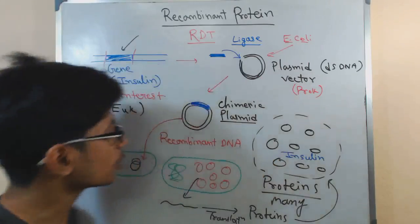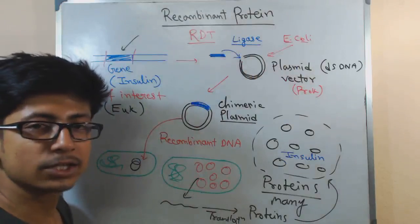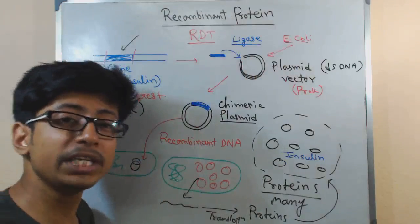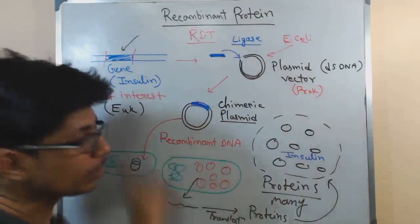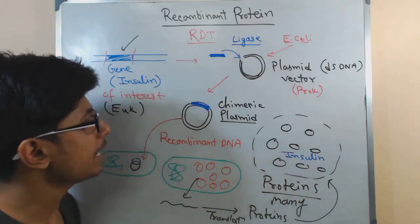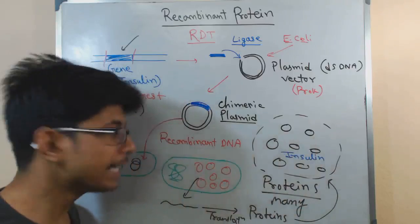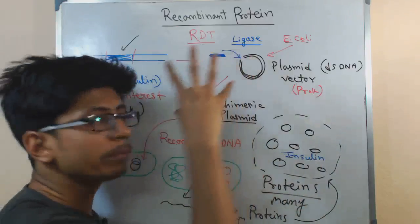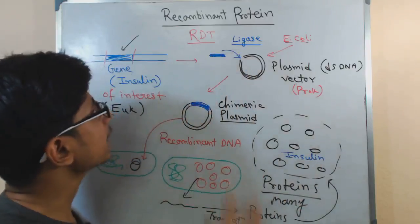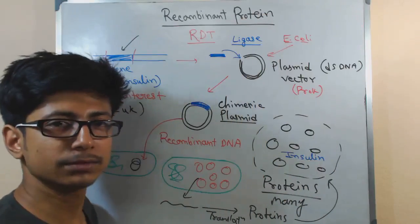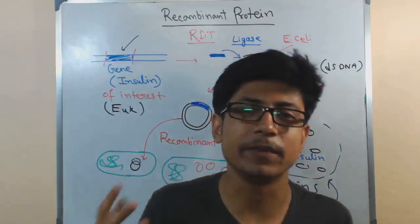This whole process is called cloning, molecular cloning. You've probably heard this name. This whole process is called cloning, and the proteins that we make using this recombinant DNA technology or molecular cloning technology is termed as recombinant protein. That is very simple.